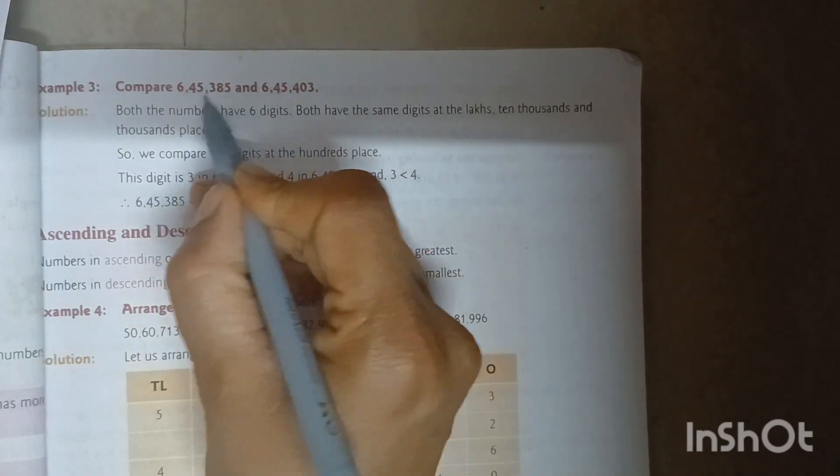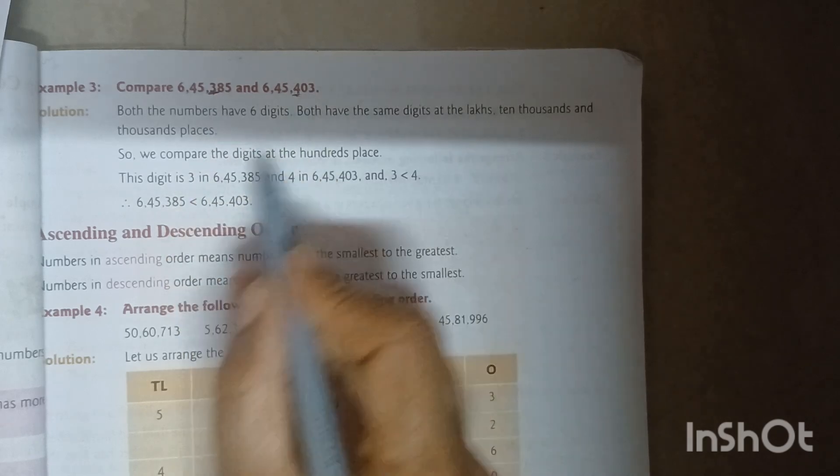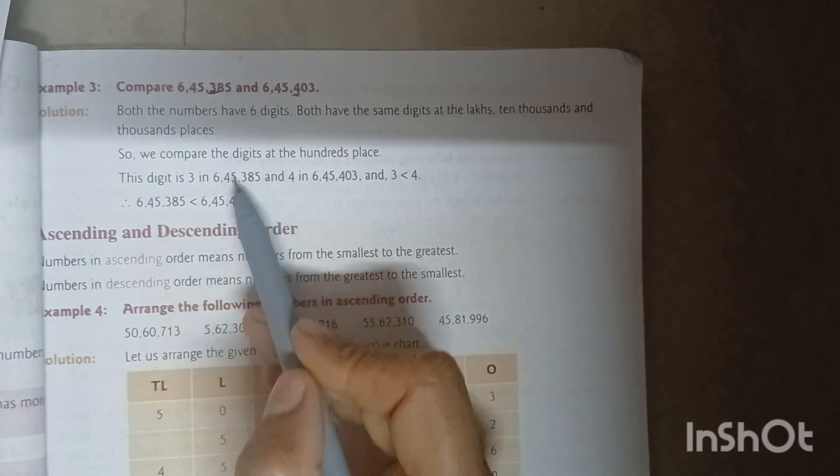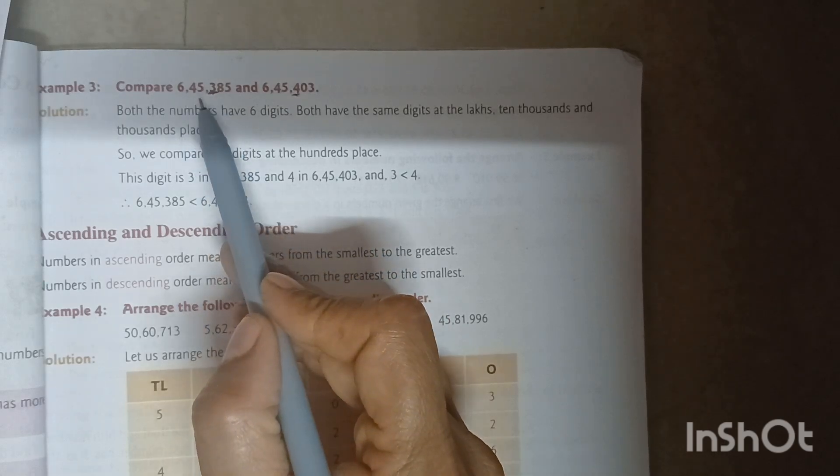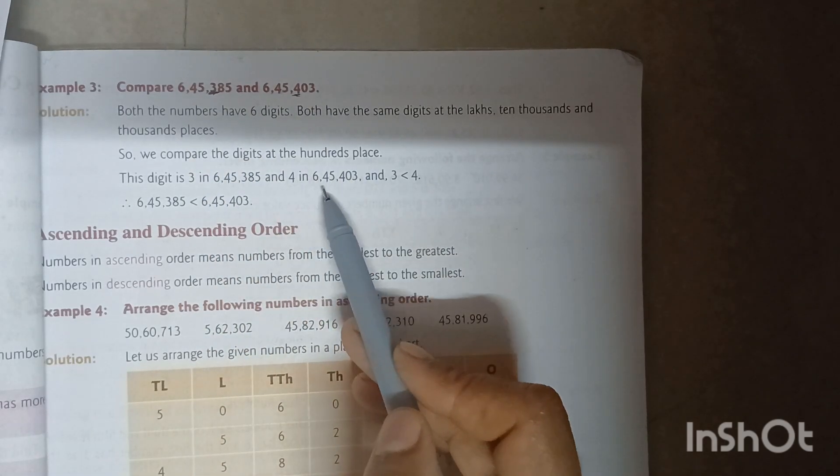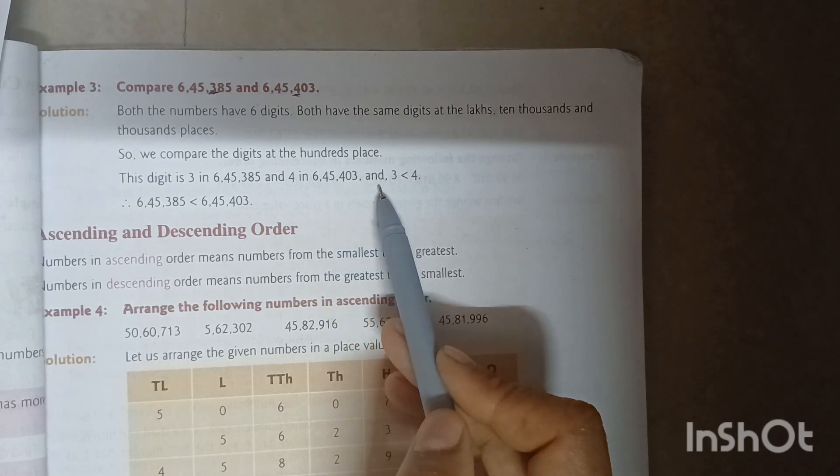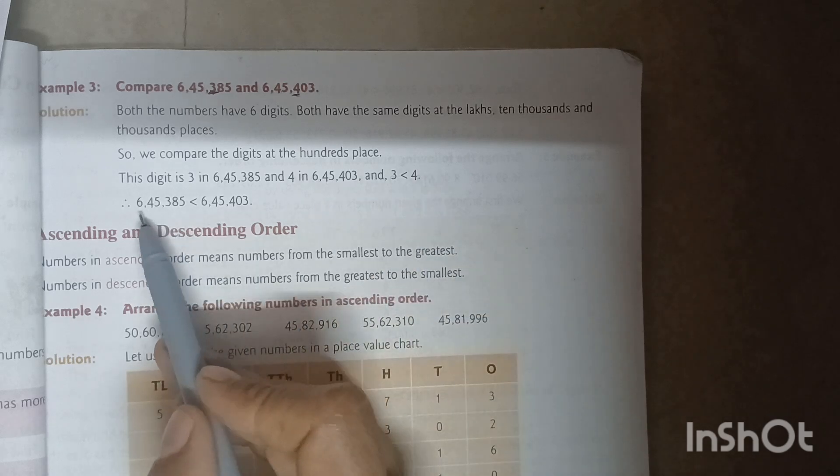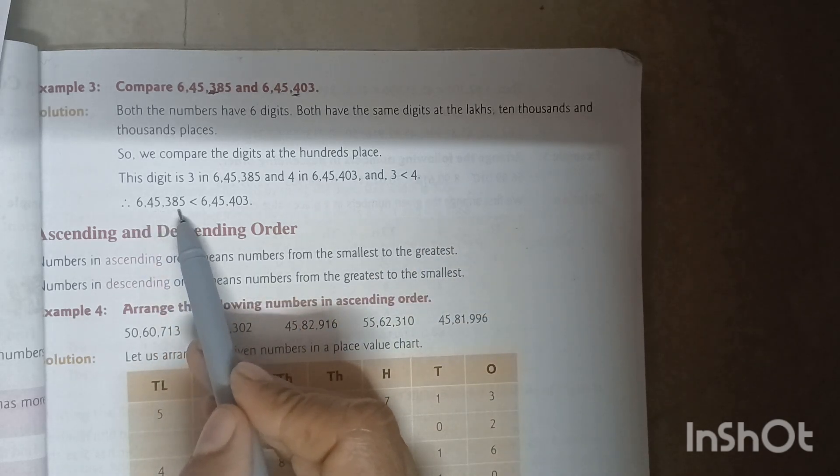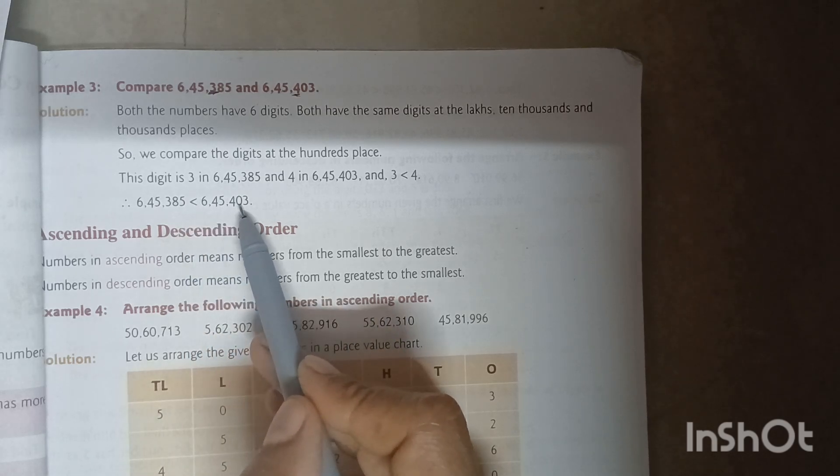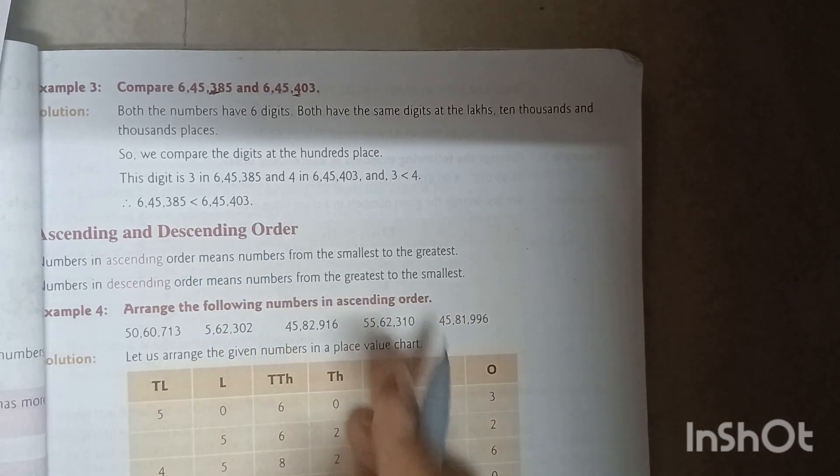Here 3 and here 4. The digit is 3 in 6,45,385 and 4 in 6,45,403, and 3 is lesser than 4. Therefore, 6,45,385 is lesser than 6,45,403.